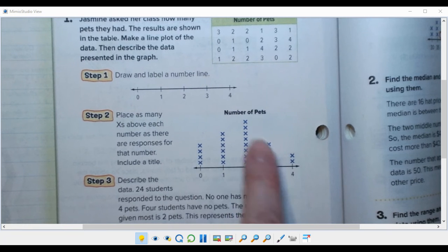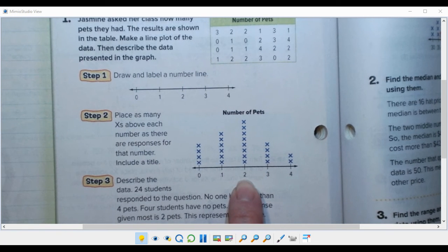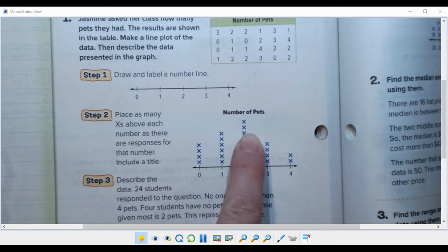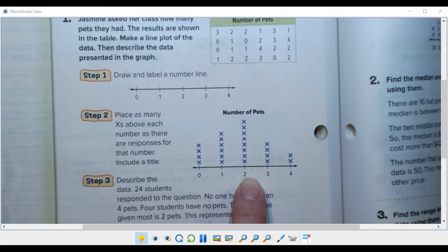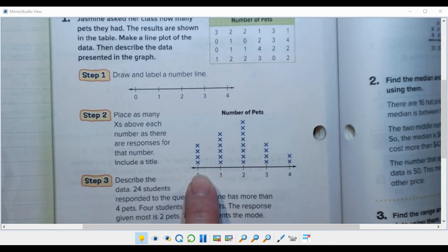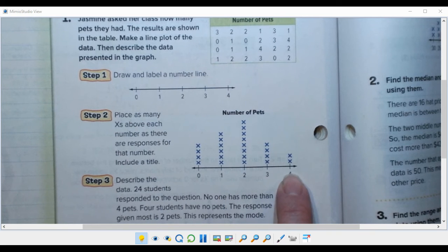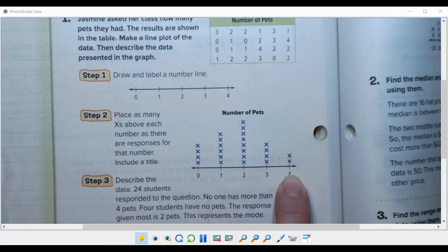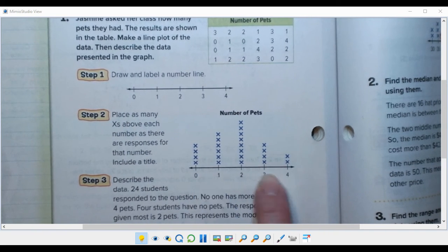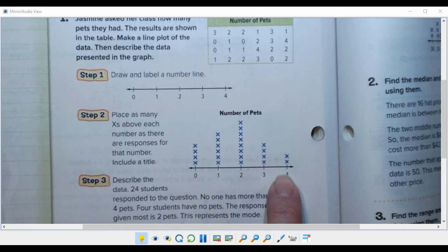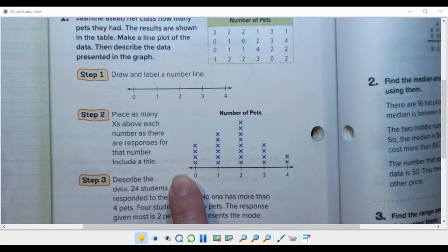Okay one of the things I want to talk about is to describe the presented data. They talk about here make a line plot then describe the data, how could you describe this? Well the mode would be two because it has the highest bar, it has the most frequently occurring number of pets. You could say that the minimum was zero, the maximum was four, the range was also four because if the highest and the lowest gets subtracted you're still going to have four.